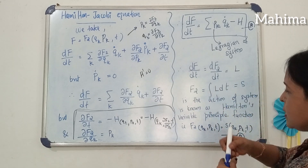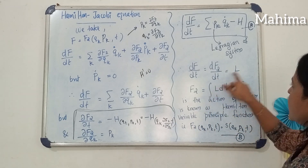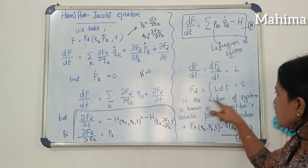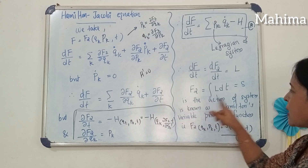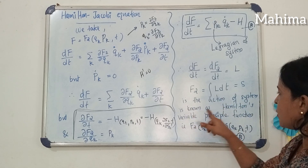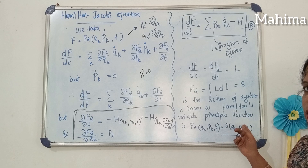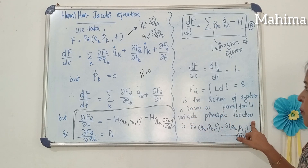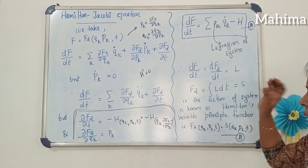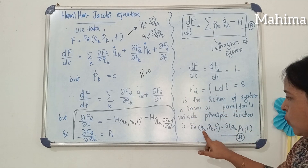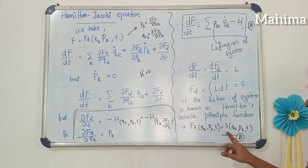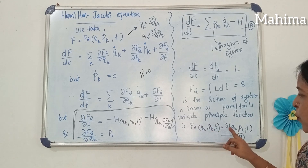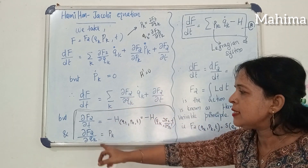To find this function F2, we integrate the Lagrangian function with respect to time. This integral is equal to S, where S is the action of the system, and it is known as Hamilton's Principal Function. F2 is a function of qk, Pk and t, and S is also a function of qk, Pk and t. So instead of F2, we can put S in all these equations.